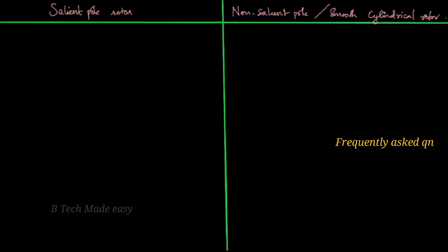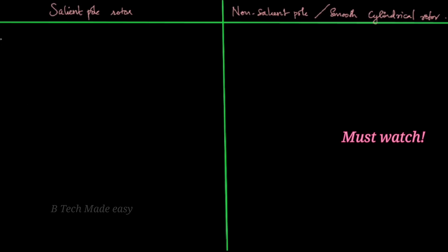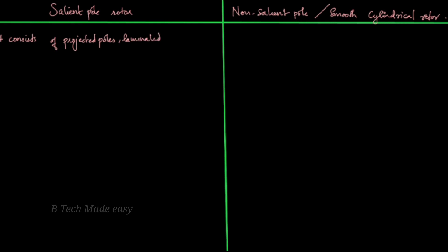First point: the salient pole type rotor construction. It consists of projected poles, laminated and made of cast iron or cast steel. The poles project outward from the rotor surface.